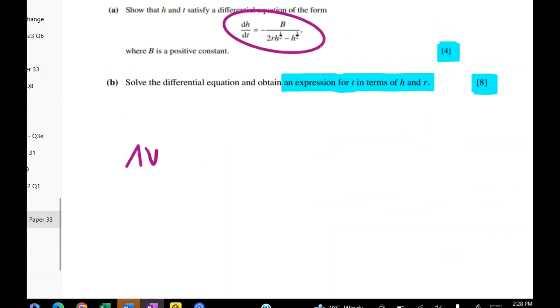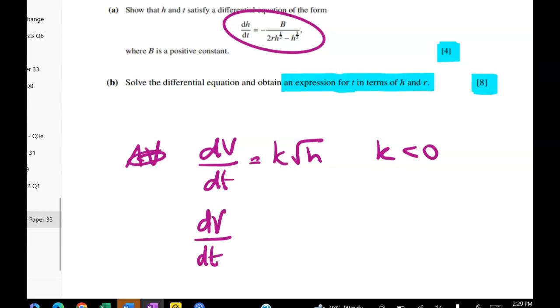So dV/dT is equal to K root H and K is negative, or if you want you could just straight away write that as dV/dT equals negative K root H where K is some positive constant. And in this case I think I'm going to go with that second version.